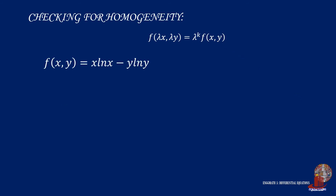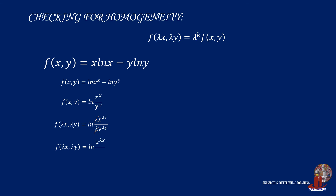For f(x, y) = x·ln(x) - y·ln(y), similarly we rewrite it as ln(x^x) - ln(y^y) = ln(x^x / y^y). Multiplying lambda gives ln((λx)^(λx) / (λy)^(λy)). Unlike the previous case, the lambda exponents in numerator and denominator differ (λx vs. λy), so they cannot cancel, and nothing can be factored out to match the standard form. The function is non-homogeneous.